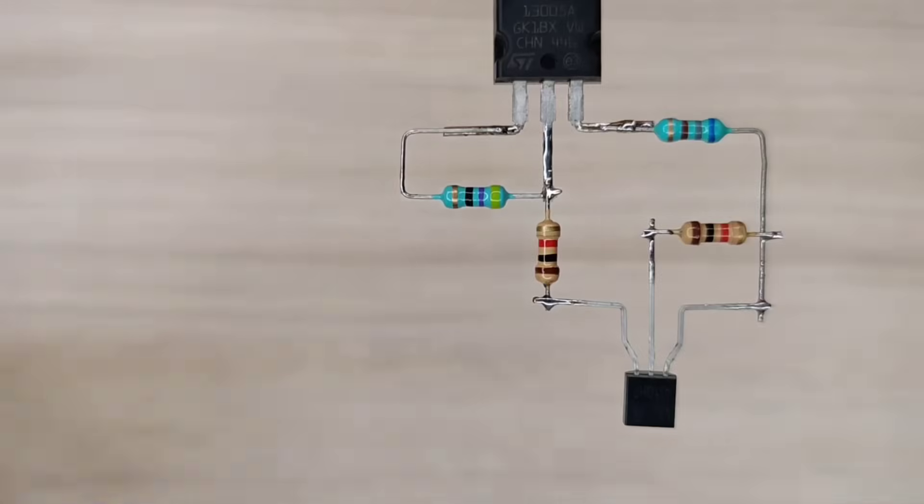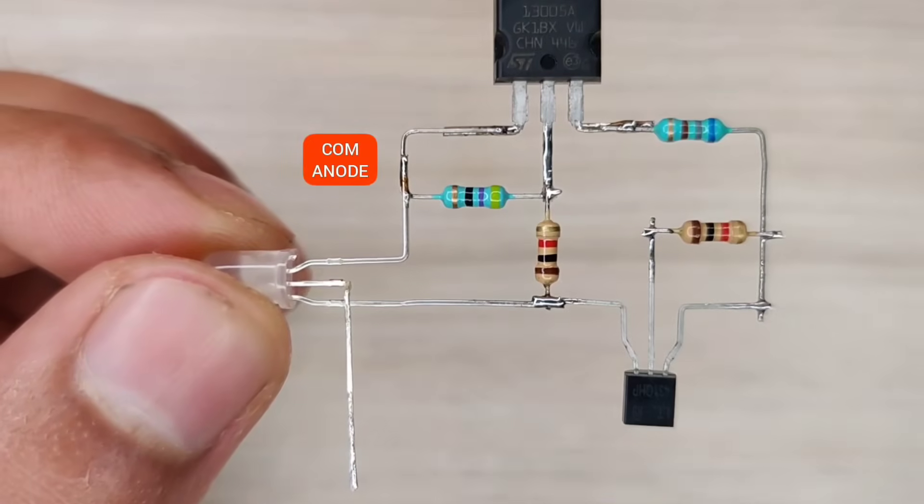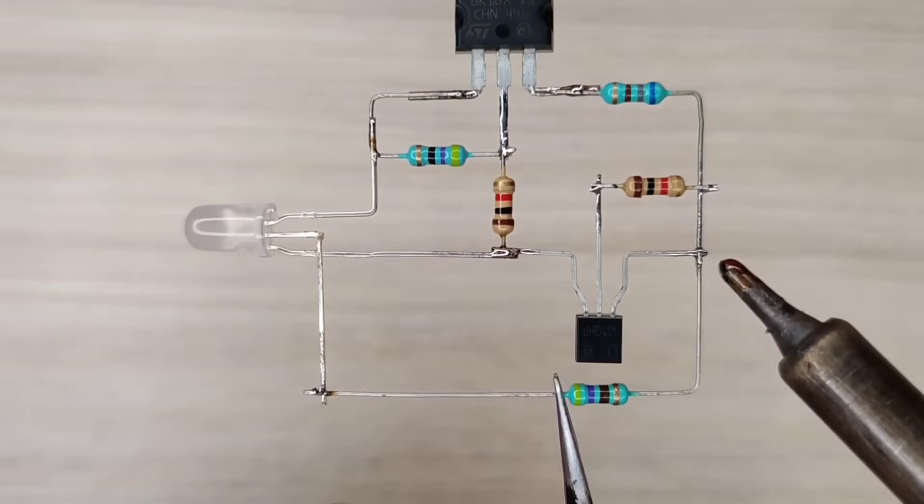Use a bi-color LED with common anode, and solder over here. Take 470 ohms resistor and solder with green negative.